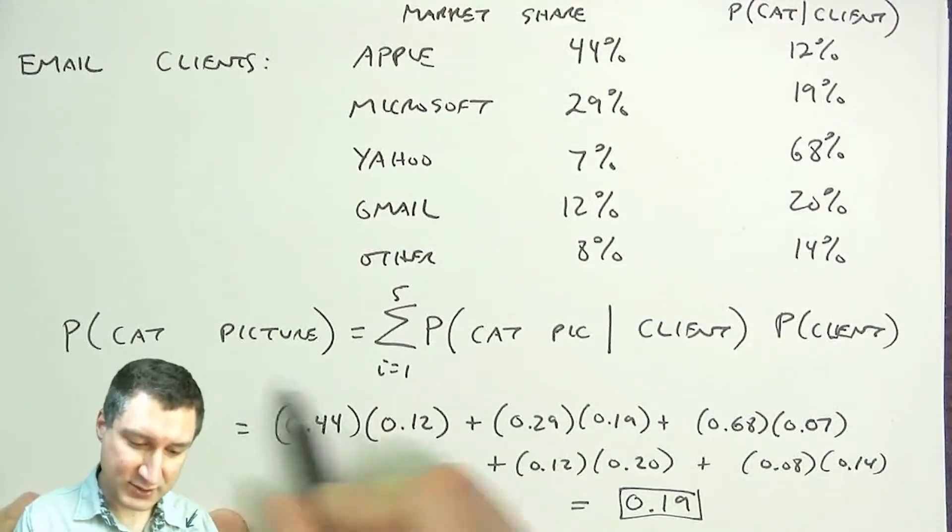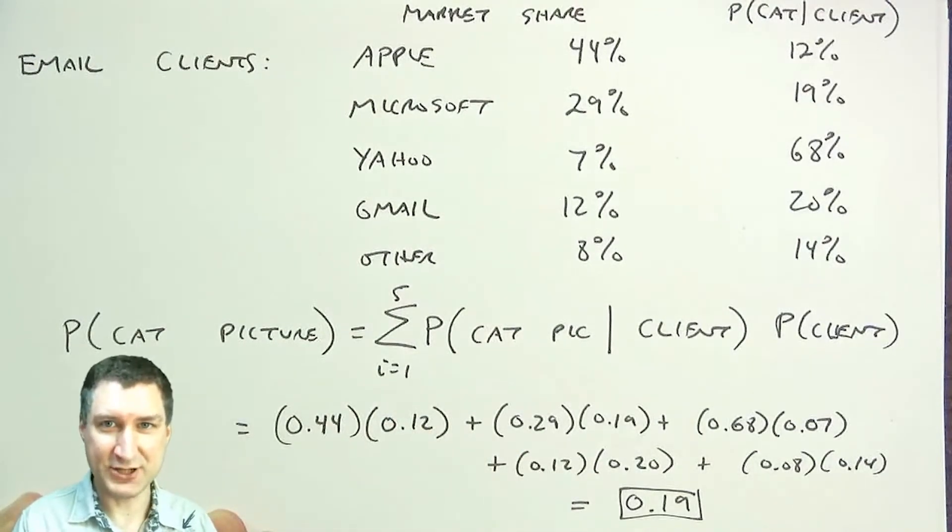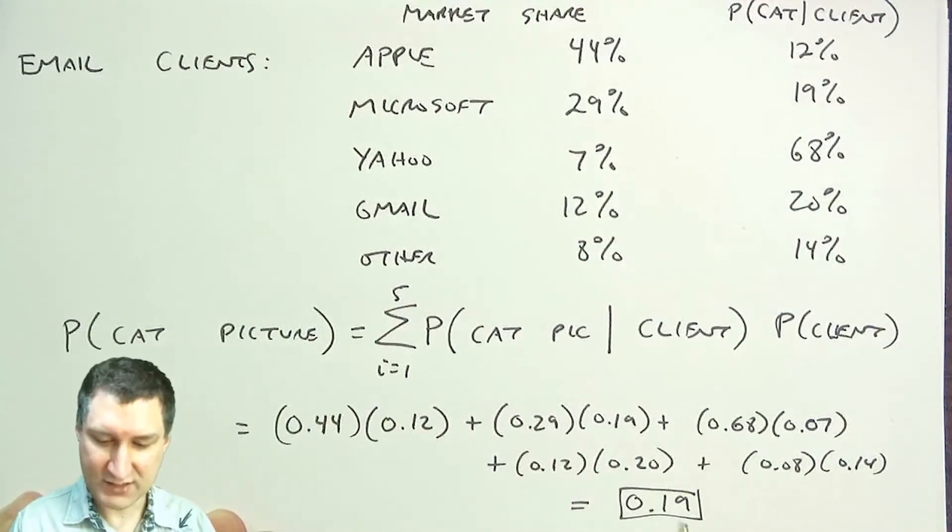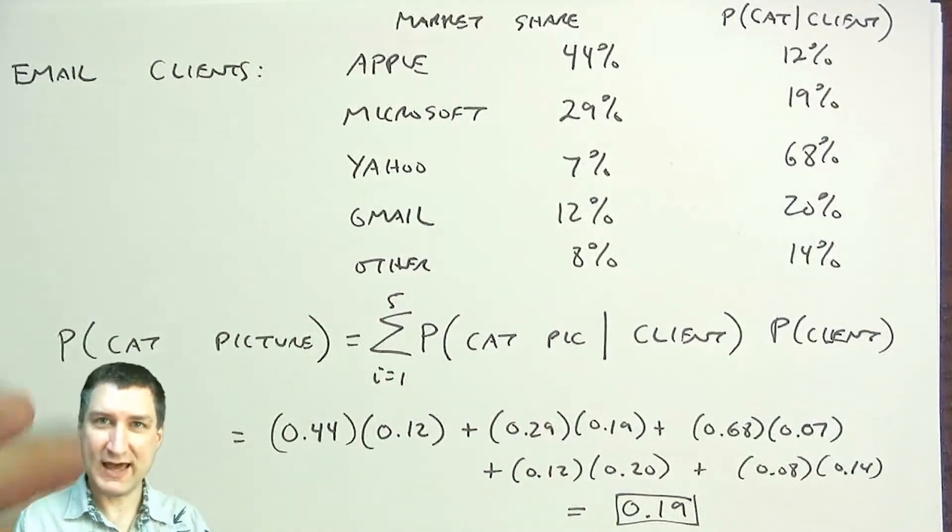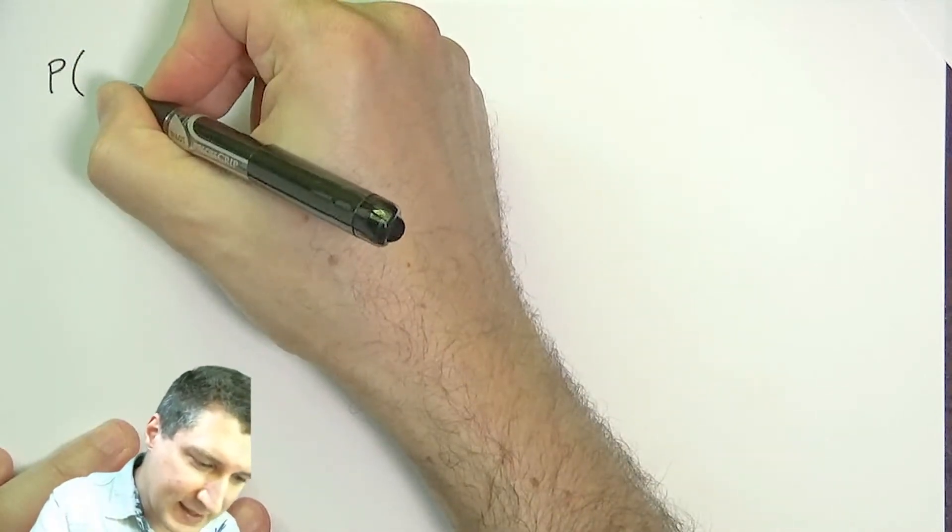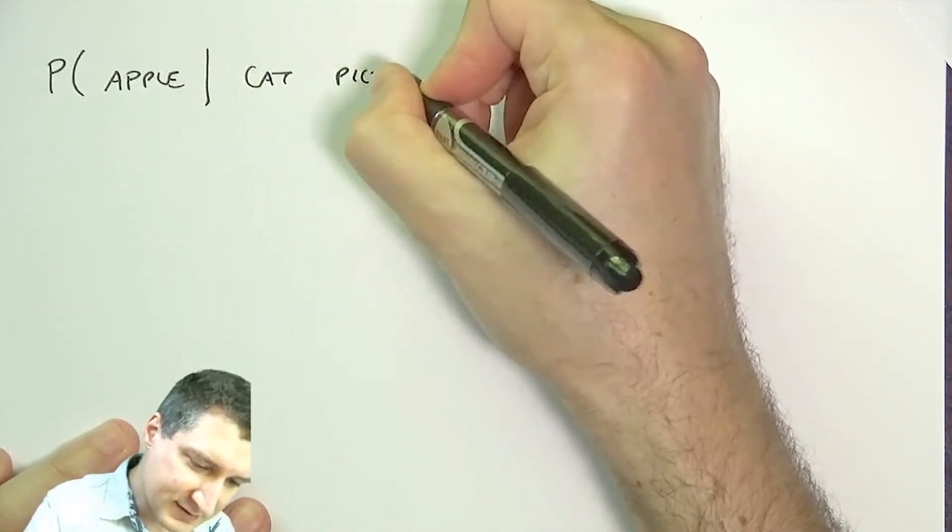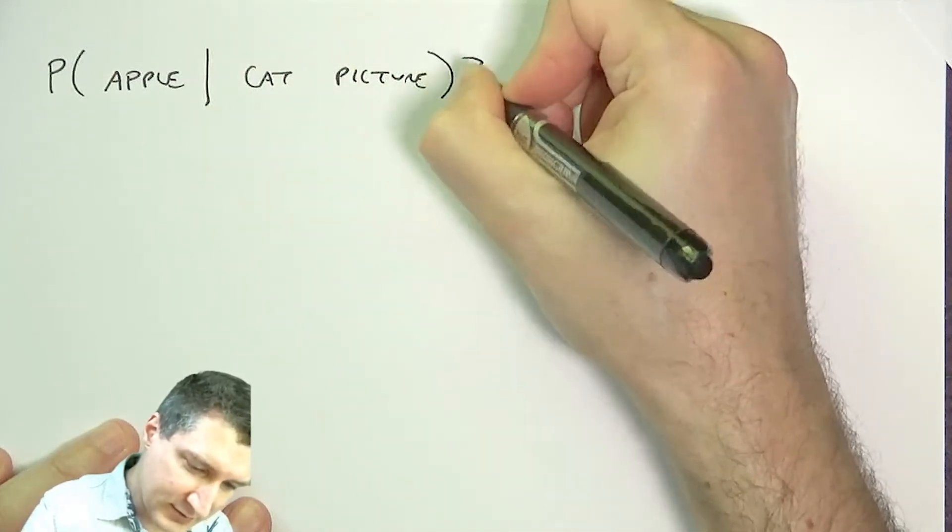And I was able to compute using the law of total probability, the overall probability of getting a cat picture anywhere across my network was this number 0.19. And now I want to ask kind of the reverse question of saying, what's the probability of Apple being the client given that I observed a cat picture?